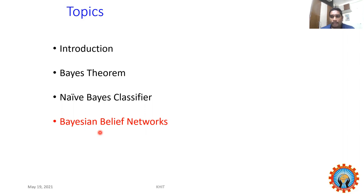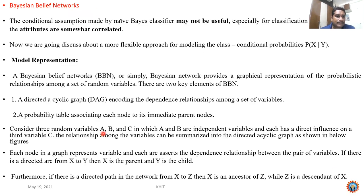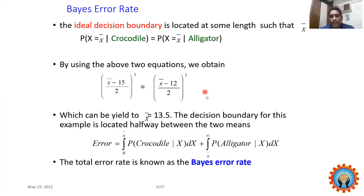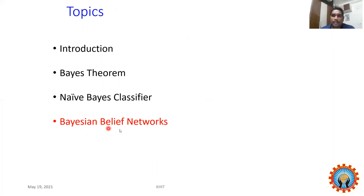To identify the error, we use a parameter called Bayes error, computed using a Gaussian distribution with a standard deviation to calculate a particular parameter. Based on this we assume our boundary, and from the boundary we calculate the error rate. When it comes to Bayesian Belief Networks, it is used when two or more attributes are correlated to each other, in order to apply Bayes theorem or Naïve Bayes classifier.